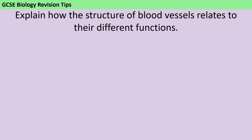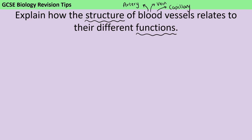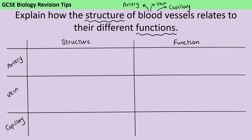Before I start writing my answer, I'm going to take a little bit of time to annotate the question with the key information I need to include. Although the question just says the structure of blood vessels, in GCSE biology that includes information about arteries, veins, and capillaries. As well as their structure — what each blood vessel looks like — I also need information about their function: how their jobs differ and why we have three kinds of blood vessel. This is a prime example of a question I would lay out as a table, making it easy for my examiner to see that I've hit each criterion and ensuring I actually talk about all three types.